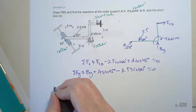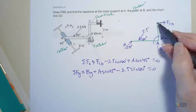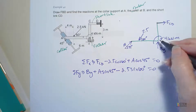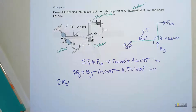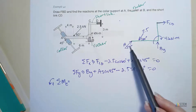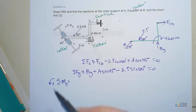For the moment equation, pick a point that's going to be easiest to use — ideally one that has a lot of forces going through it. I'm going to pick C because it has FCD going through it and also BY going through it, eliminating two forces. Counterclockwise is positive. Let's start setting up the moment equation by breaking forces into components.